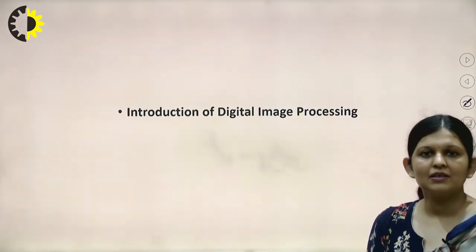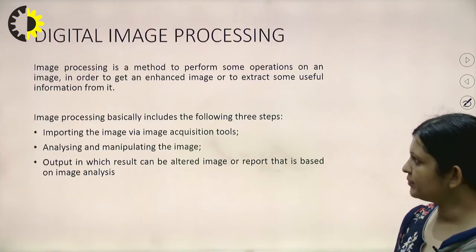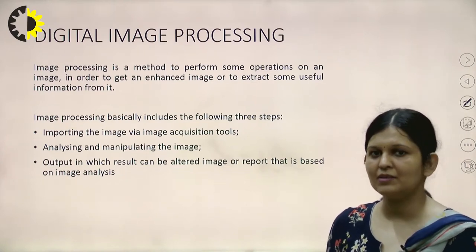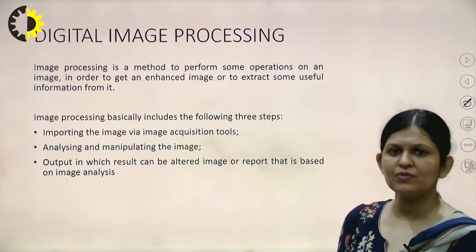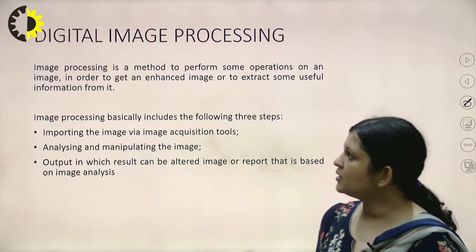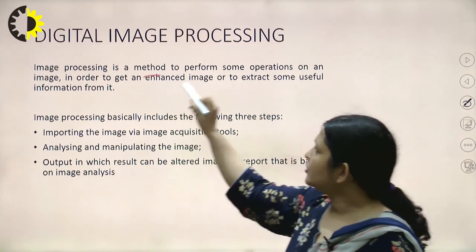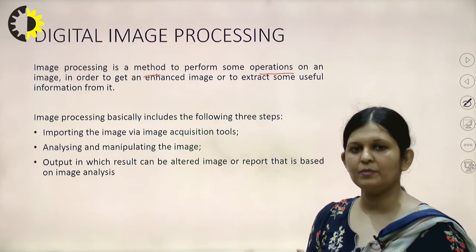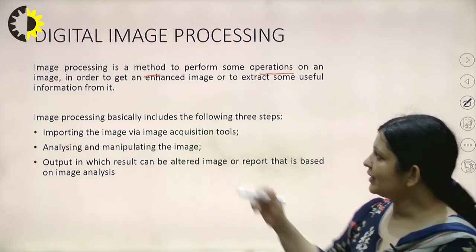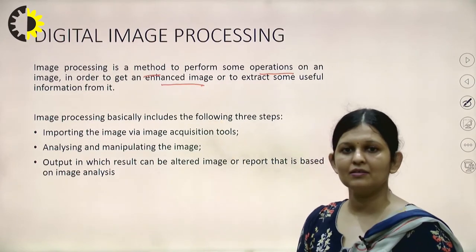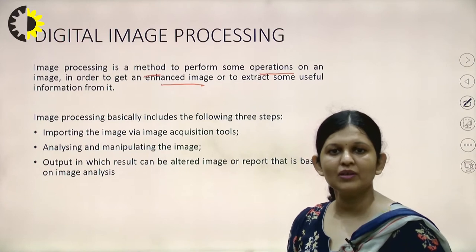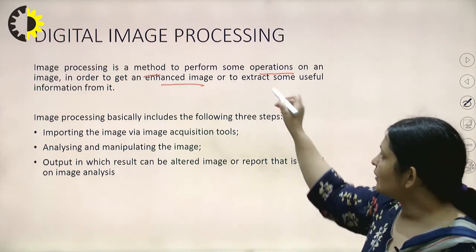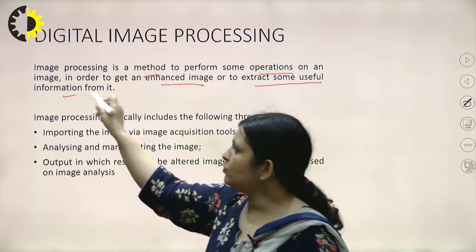First, let's see the introduction to digital image processing. It is made up of three main words: digital, image, and processing. Image processing is a method used to perform operations on an image so that we can get an enhanced image — one of much better quality compared to the original — and to extract useful information from it.